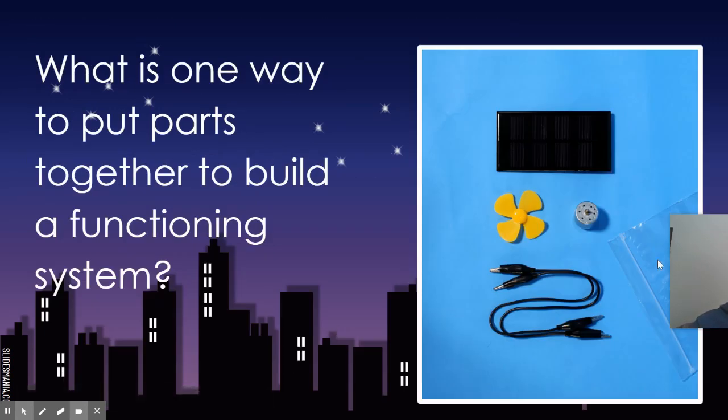All right so we used this simple electrical system and you watched a video of this. Notice there are some parts. We have some wires with some clamps. We have a fan. We have a motor and we have a solar panel.